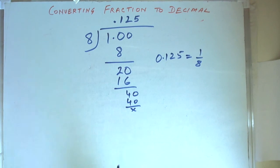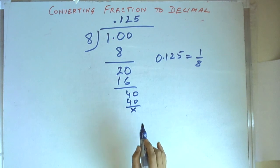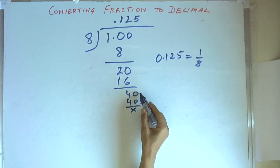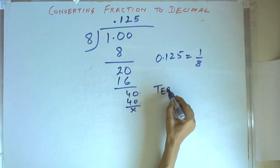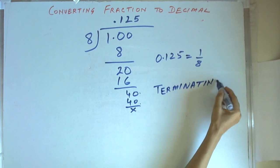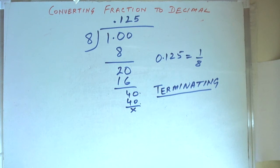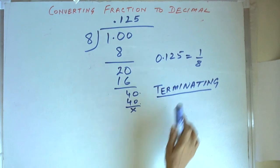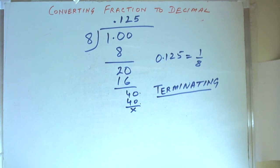Whenever we do this type of division and we are able to get to a result where the last value gets fully divided, this is called a terminating decimal. We call it terminating because we are able to get the exact value of the fraction in decimal. The result is complete in all respects.